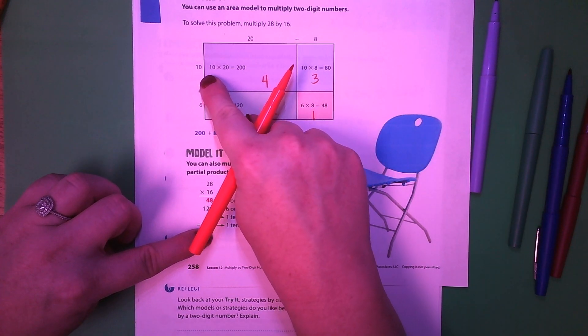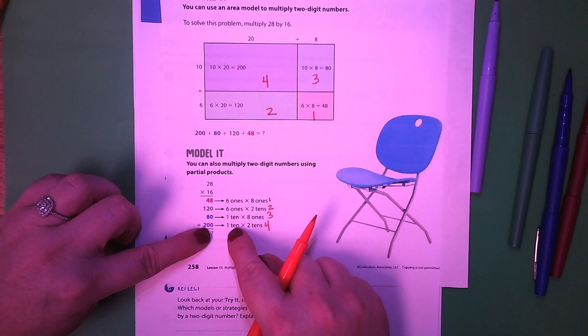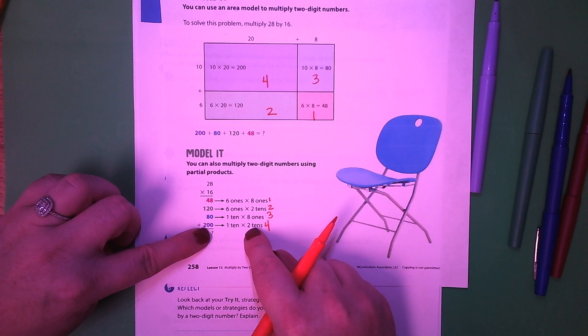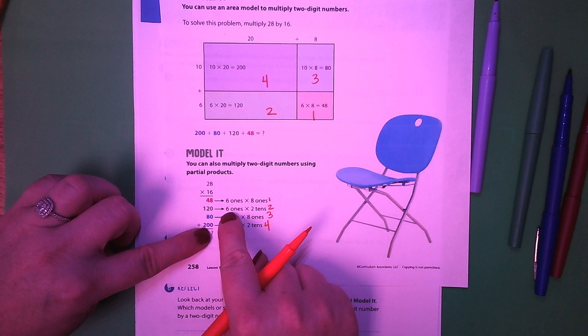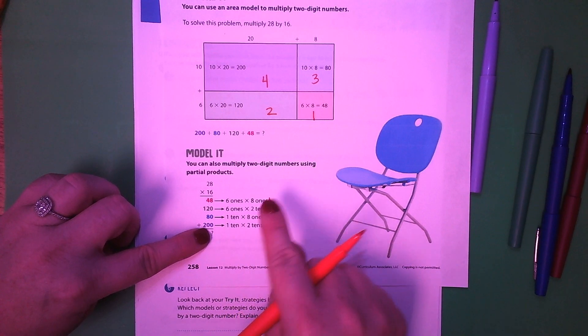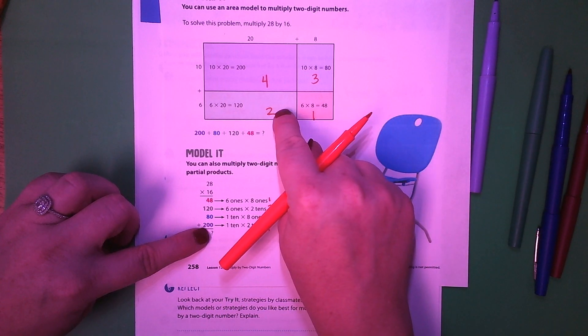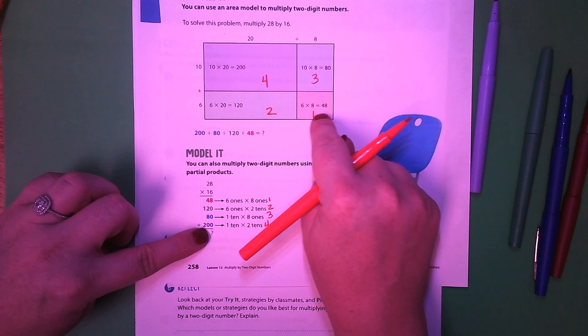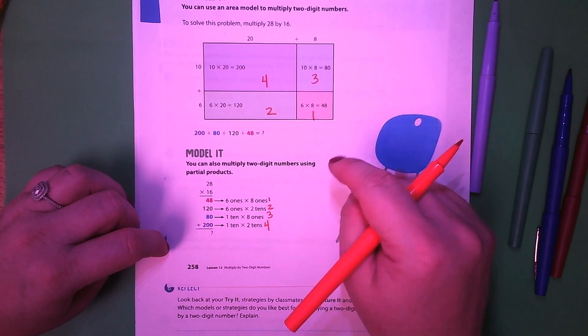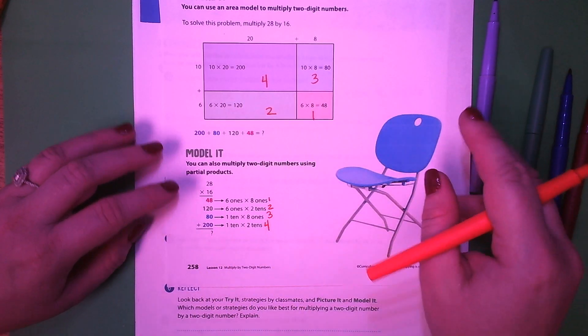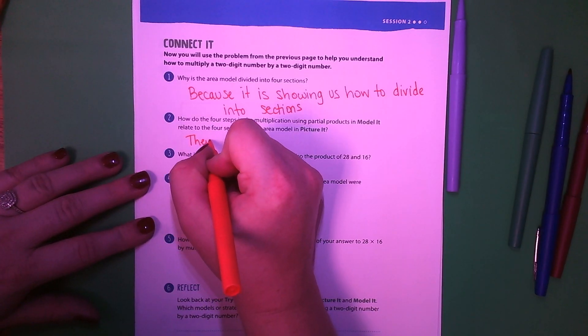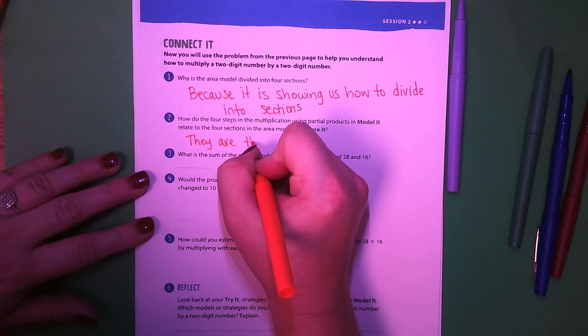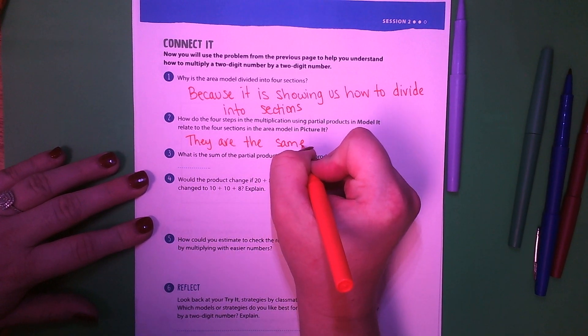How do the four steps in the multiplication using partial products model relate to the four sections in the area model? So right here you have one step, two step, three steps, four steps. Up here we have four boxes. Well, look, there's one, two, three, four. So whatever this is, 10 times 20 will be where 200 is. 10 times 20. Two, 6 times 20. And my two, 6 times 20. But notice how it goes backwards, one, two, and then crosses over. One, two, three, four. Kind of makes a weird backward z.